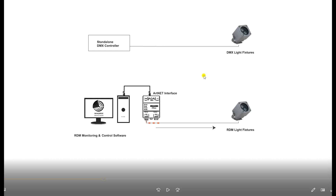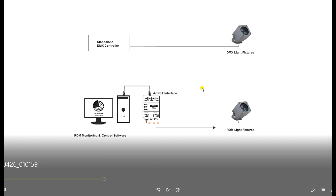So why is RDM getting more popular nowadays? What are its additional features? RDM can give a signal to the light fittings, but it can also collect information about the lights. It can ask questions to the light, and the light can give a response back to the control system.